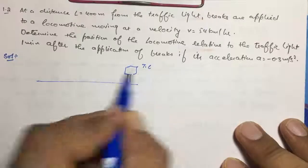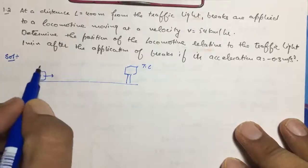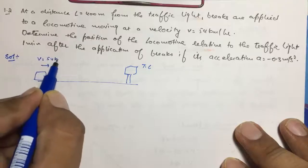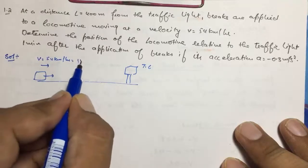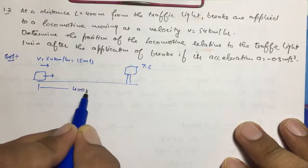So this is traffic lights and we have a locomotive, say this is a car or something like that. So it is moving with velocity V = 54 km per hour, converting it into meters per second that will give me 15 meters per second, and the distance between this is 400 meters.